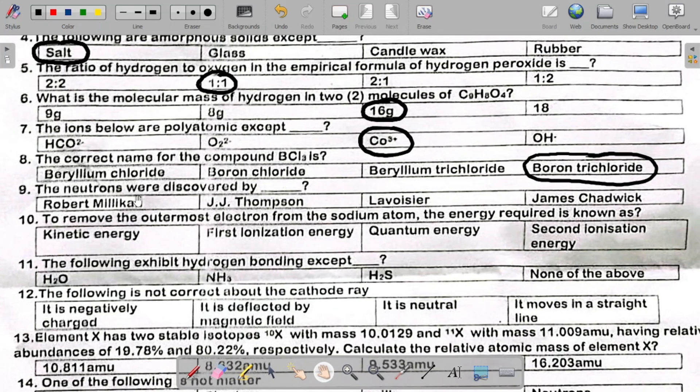Number nine says the neutrons were discovered by, so who discovered neutrons? The answer is James Chadwick. So notice that James Chadwick discovered the neutrons.